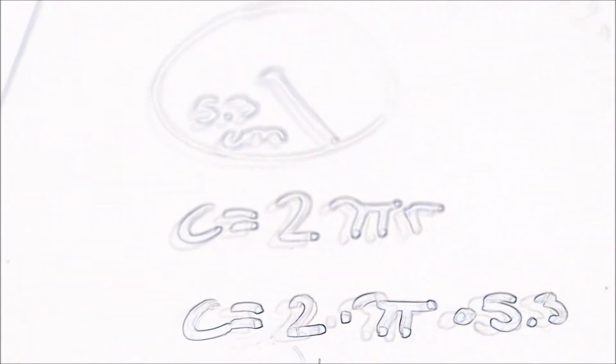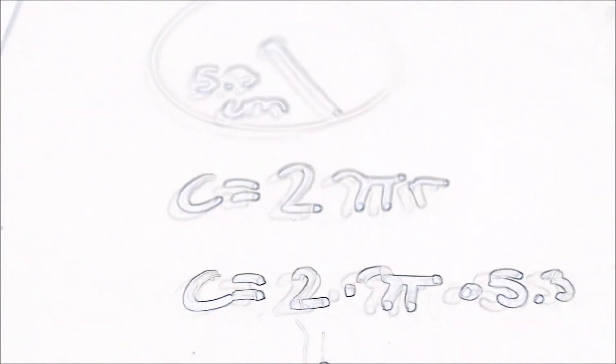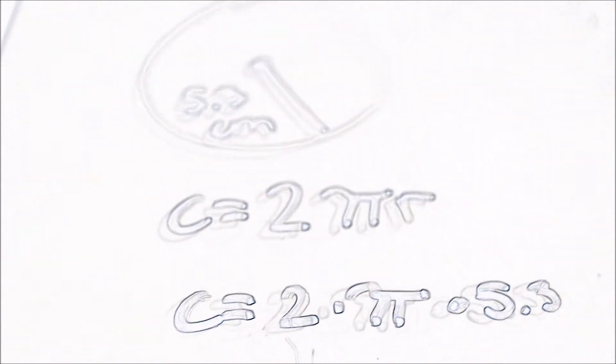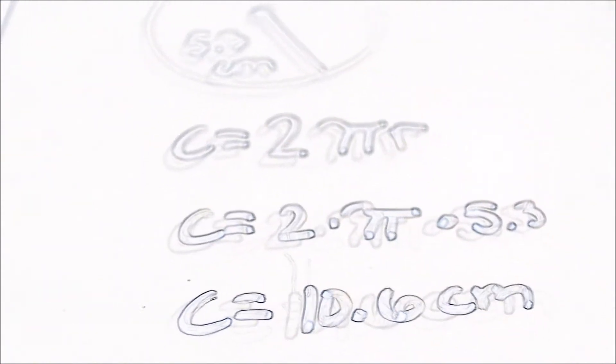So by substituting it, we would get C equals 2 times pi times 5.3. From that, we would get C equals 10.6 pi.